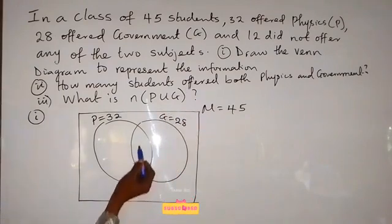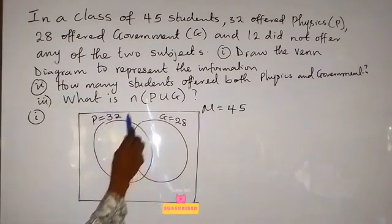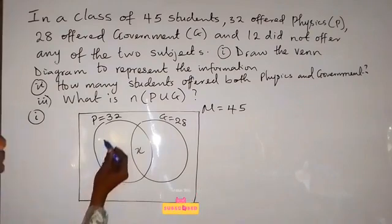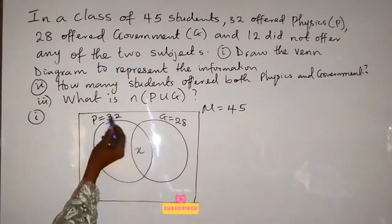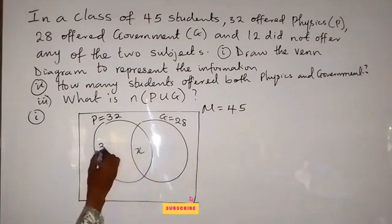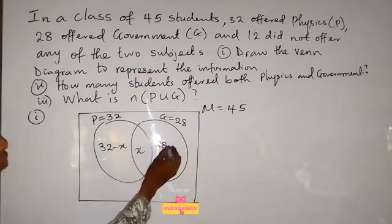Now, this space we have here where they are intersected is for people that offer both physics and government. And even in question 2, we are asked to find out how many students offer both physics and government. So here now, this space is representing people offering both physics and government. Then we can see that this physics here, circuit here, everything is 32. And we are having x here already. So we can find physics only now, that is people offering physics only without government. That will be 32 minus x.